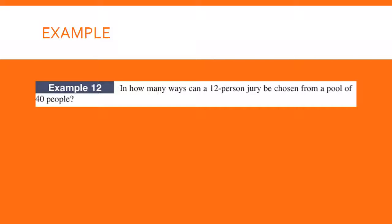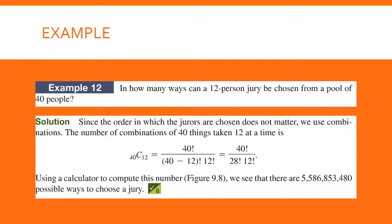Now see if you can figure out how many ways a 12-person jury can be chosen from a pool of 40 people. That's 40 choose 12: 40 factorial over 28 factorial times 12 factorial, giving 5,586,853,480 ways to choose a 12-person jury from 40 people.